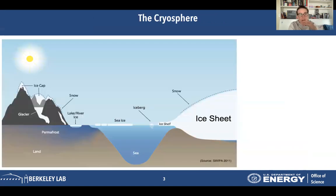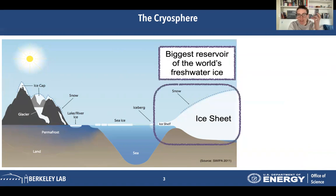Let's take a minute and talk about the cryosphere. For those of you not familiar with what that is, the cryosphere is basically everything that's frozen on this earth — ice caps, snow, glaciers, permafrost, icebergs, but mainly ice sheets. Ice sheets are actually the biggest reservoir of the world's freshwater ice; they contain about 90 percent of it.